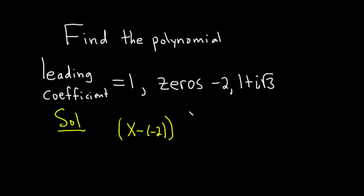So whenever you have a zero, you know that x minus the zero is going to be a factor. So here we know that x minus 1 plus i square root of 3 is also a factor.